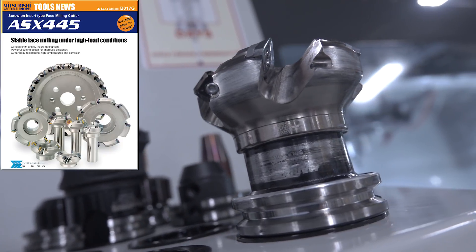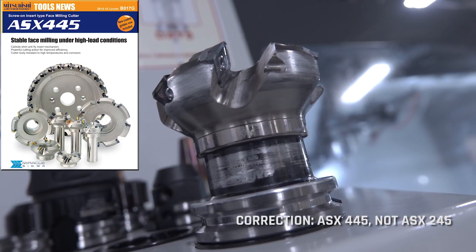I'm here with Brian Rowe. He is our local Mitsubishi tooling rep. I met him when we first bought our Haas, and we actually got the ASX245 that we use to give us some really awesome surface finishes on our aluminum parts.